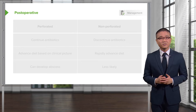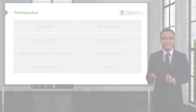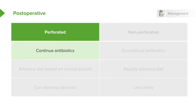How do we care for the patient postoperatively? It depends on whether the patient is perforated or non-perforated. In perforated patients, one should consider continuing antibiotics longer. Diet is advanced based on the clinical picture — has the patient resolved bowel function, had bowel movements, passed gas? Have their fever trends been downward? Has their leukocytosis or white blood cell count returned to normal? Remember to counsel the patient that with perforated appendicitis, they are at higher risk for developing an intra-abdominal postoperative abscess.